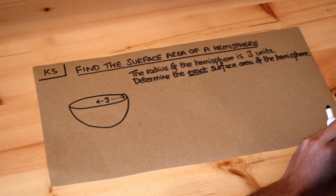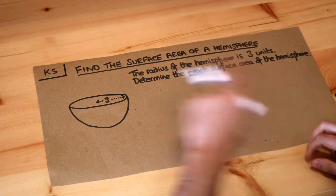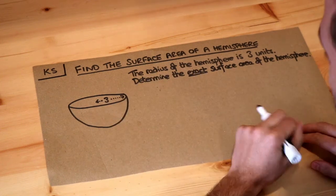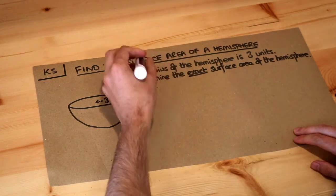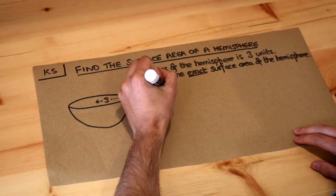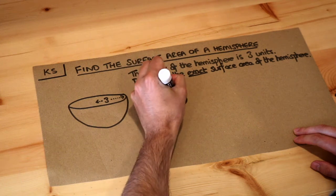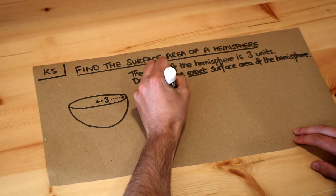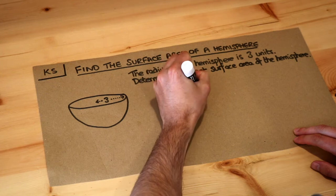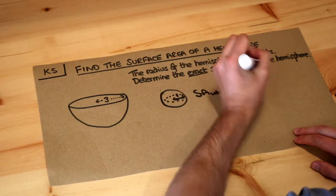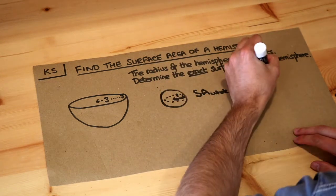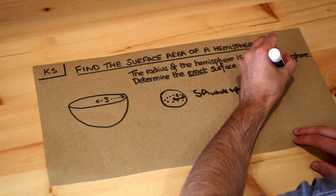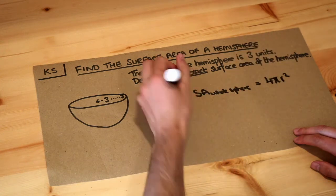Hello and welcome to this Dr Ross Maths key skill video on finding the surface area of a hemisphere. A hemisphere is just half a sphere. From the previous video, if we had a full sphere of radius r, the surface area of a whole sphere was equal to 4 pi r squared, where r is the radius.